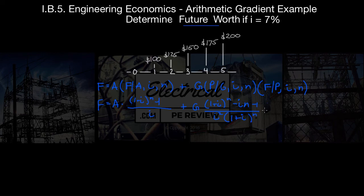And then next, we have that times 1 plus i to the n. So we plug in all of our values and we come up with F equals, we know A is 100. So F equals 100 times 1 plus 0.07 to the 5 minus 1 over 0.07.